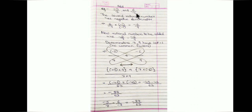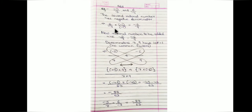Let's take one more example: minus 5/7 and 6 upon minus 9. Our second rational number has a negative denominator, so we follow the same method. We multiply 6 upon minus 9 by minus 1 to get minus 6/9 as the new rational number with a positive denominator. Now we need to add minus 5/7 and minus 6/9.